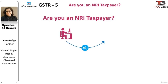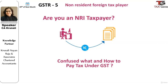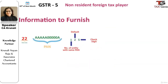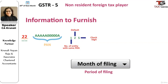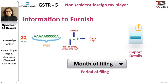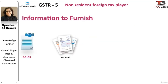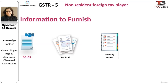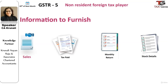Every registered non-resident taxable person is required to furnish GST Return 5. It requires business details of the non-resident, including details of outward supplies and inward supplies. Like any other return, it includes basic details of the taxpayer with the GSTIN number, period to which the return pertains, details of imports, details of outward supplies, details of input tax credit available, details of taxes paid, details of the monthly return, and finally the details of closing stock.